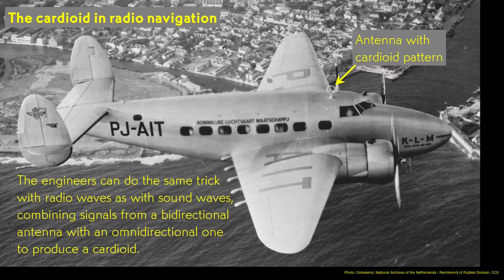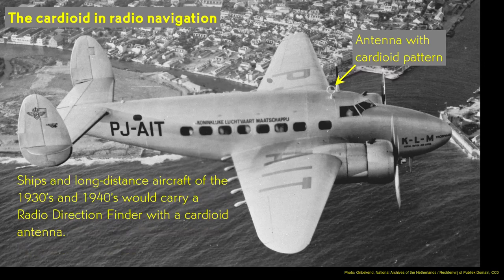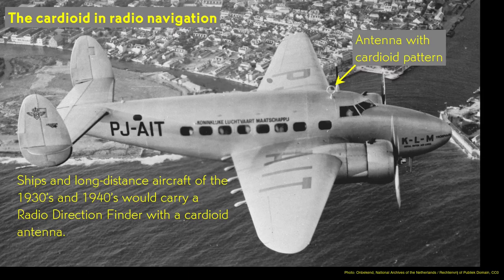The loop of the antenna has a bidirectional pattern, that is, a cosine, and the stick has an omnidirectional one. Practically any ship or long-distance airplane of the 1930s or 40s would carry a radio direction finder with an antenna arrangement like this.